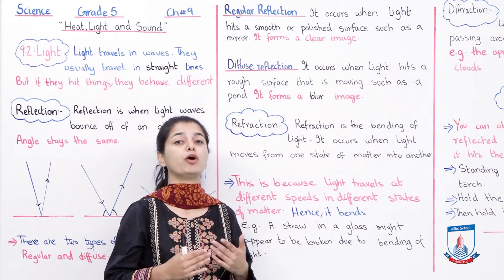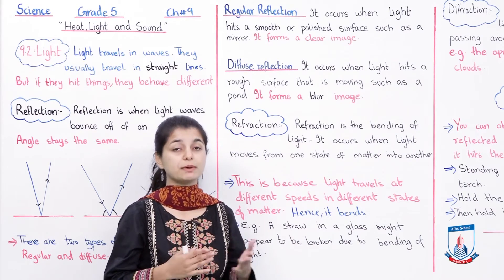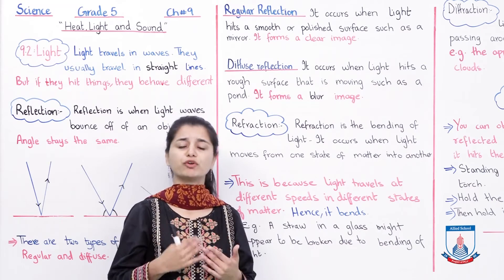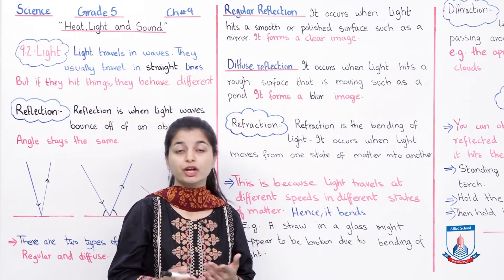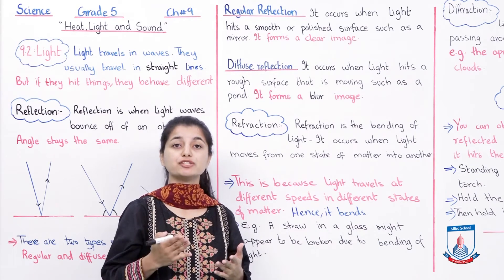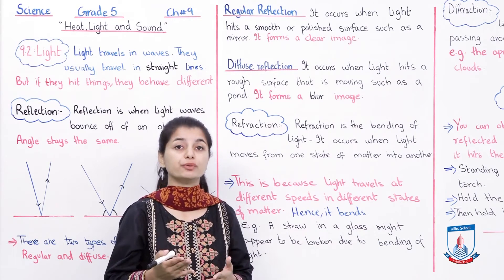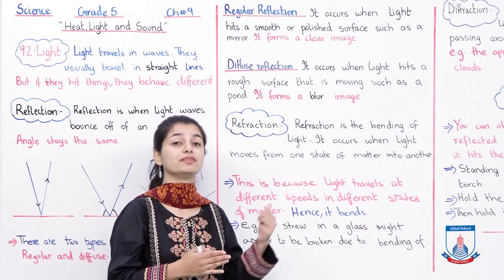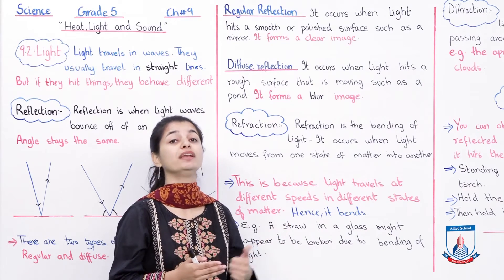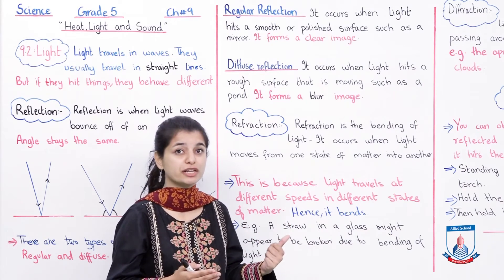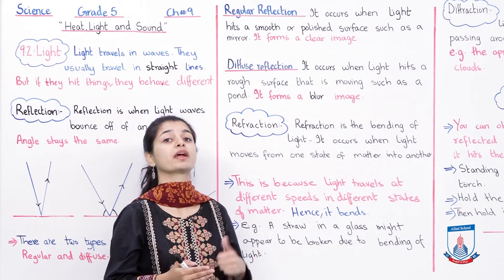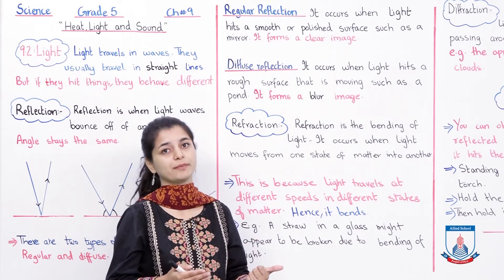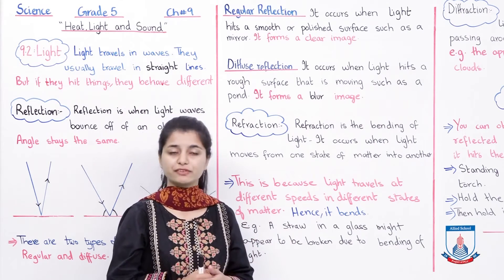If you look in a pond where the water is moving, your image is distorted — there is a blur. That is exactly because of diffuse reflection, which is where the surface is rough or not polished. That's it for reflection.